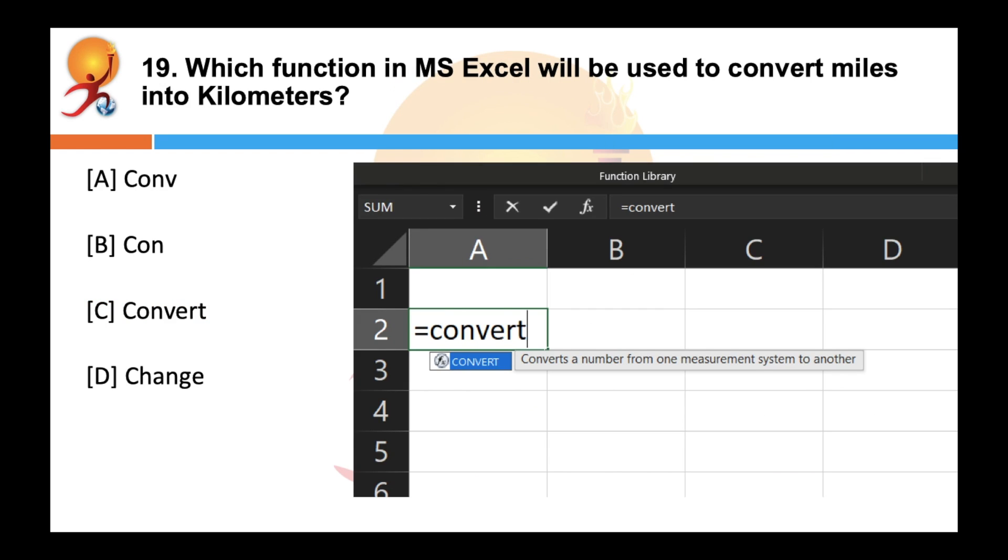Which function in MS Excel will be used to convert miles into kilometers? Correct answer is C. The convert function will convert miles into kilometers. So MS Excel's convert function you have to write is equals convert and it converts a measurement from one unit to another.